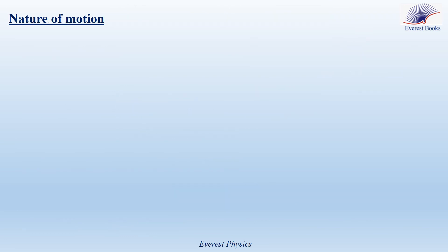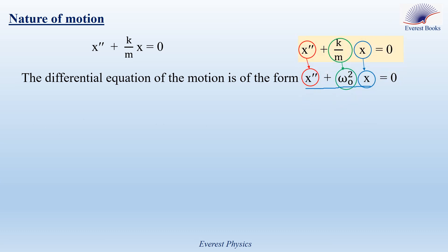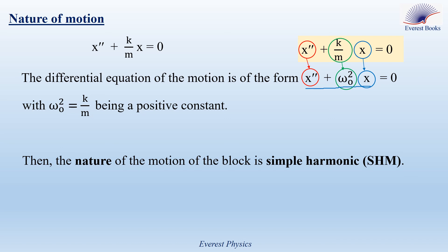Now, let's specify the nature of motion of the block. The obtained differential equation is x double prime plus K over M x is equal to zero. The differential equation of the motion is of the form x double prime plus omega naught squared x equal to zero, with omega naught squared equal K over M being a positive constant. Then, the nature of the motion of the block is simple harmonic.